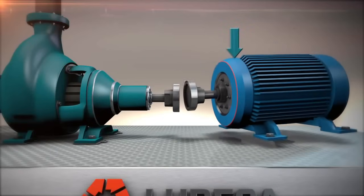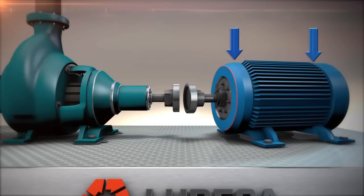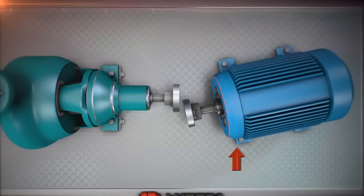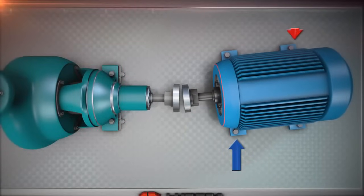Once we know the misalignment, we can correct it by adjusting the movable machine vertically and moving it side to side in the horizontal plane.